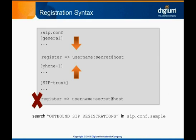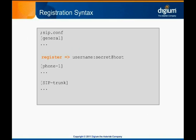If you add a register line below a user or peer definition, it will not work properly. The syntax for a register line begins with register equals greater-than. The minimum required options are the username at host. There are other additional options, such as the SIP secret, with the username and secret separated by a colon. Your trunk provider may give you the exact syntax to use to register with their system, in which case you can just paste it into your sip.conf at the proper location.